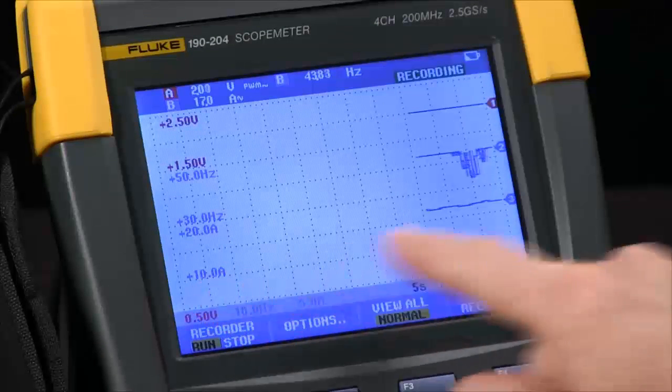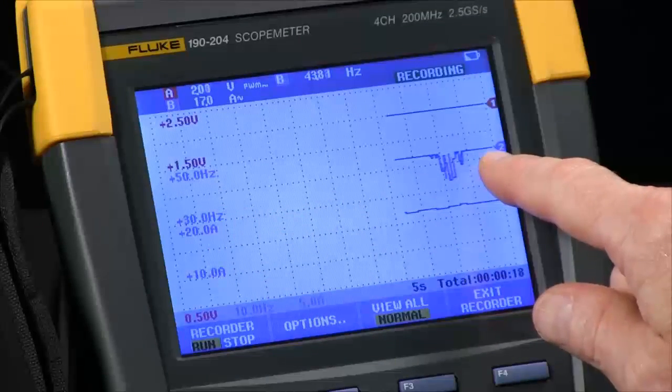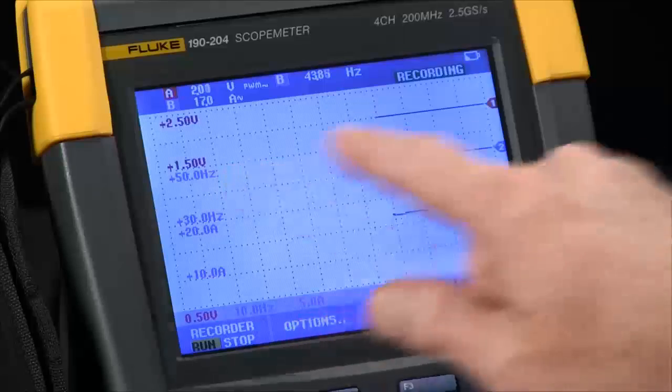You can see your amperage is the bottom trace, your frequency on channel B is the middle one, and your voltage being the top.